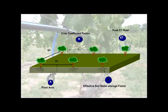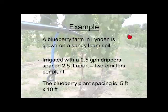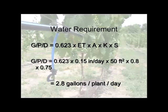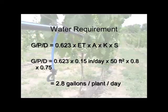The factors are: evapotranspiration, soil storage, plant area, and crop coefficient. For a blueberry farm in Linden on sandy loam soil, irrigated with 0.5 gallon per hour drippers spaced 2.5 feet apart, and blueberry plants spaced 5 feet by 10 feet: peak ET is 0.15 inches per day, plant area is 50 square feet, crop coefficient for blueberries is 0.8, and soil storage factor is 0.75. That calculates to about 2.8 gallons per plant per day in the middle of summer.